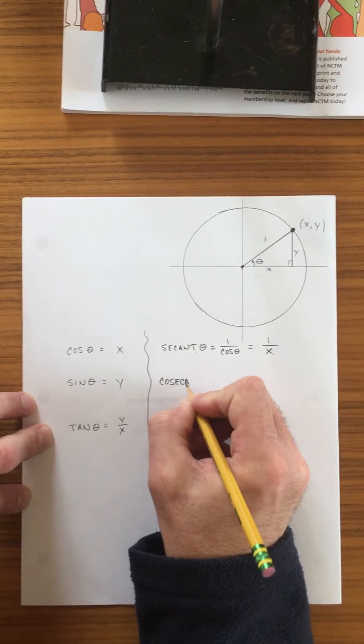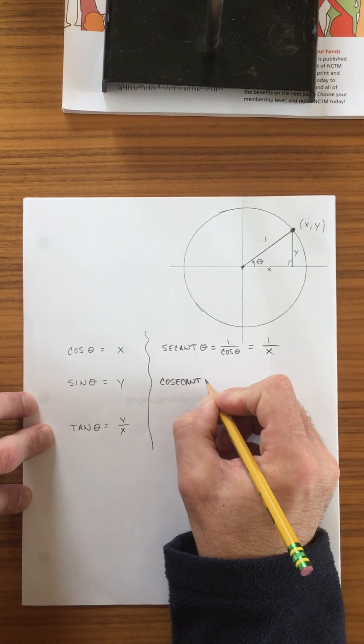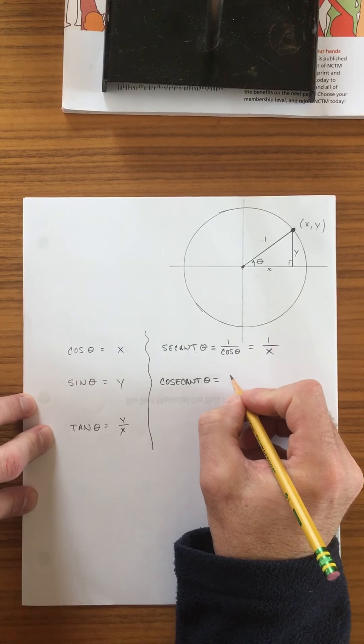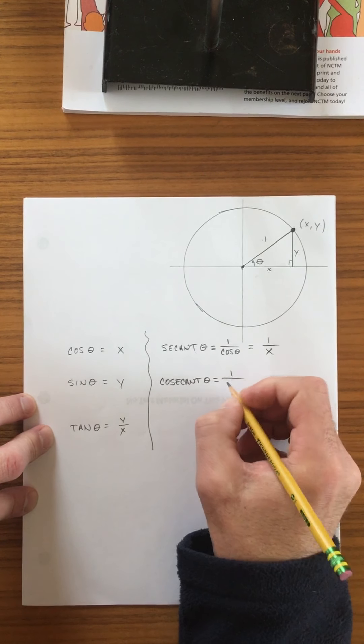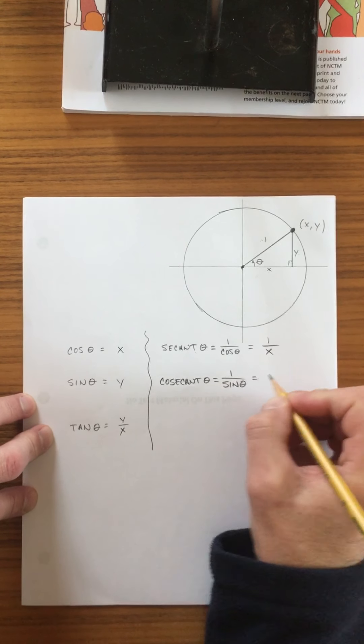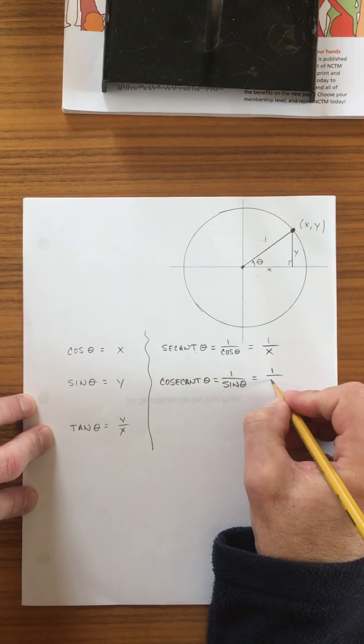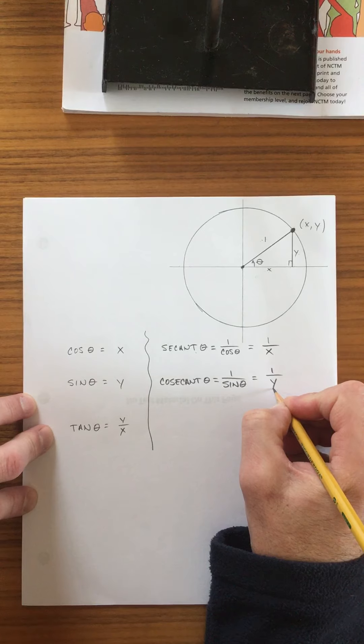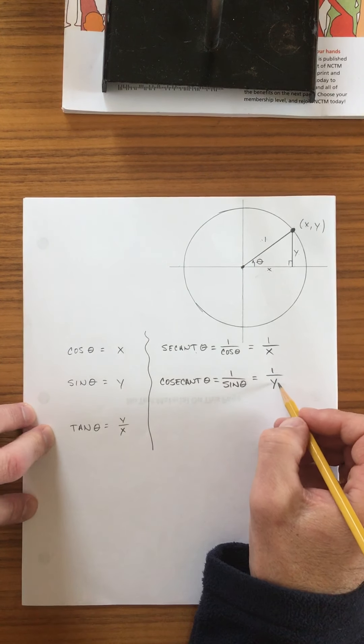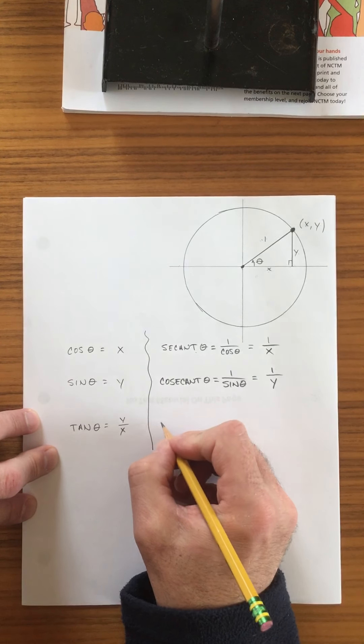The next inverse function is called cosecant. And cosecant is defined as one over sine. And we know that sine is y. So the cosecant of an angle is one over y.